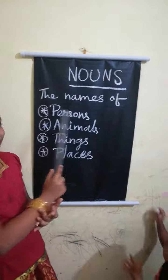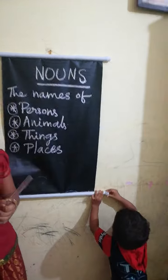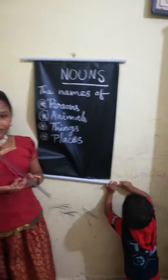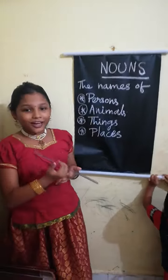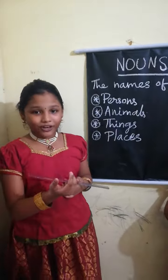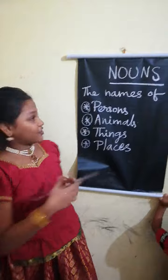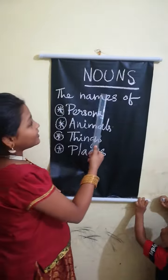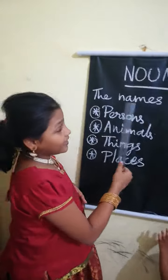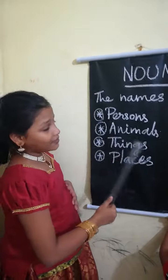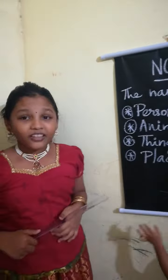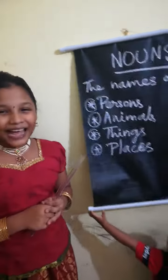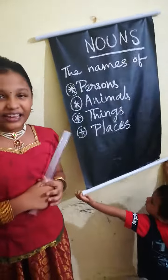The names of persons are Suganya, Suguna, Rajendiprakash, etc. The names of animals are Dog, Cat, Lion, etc.